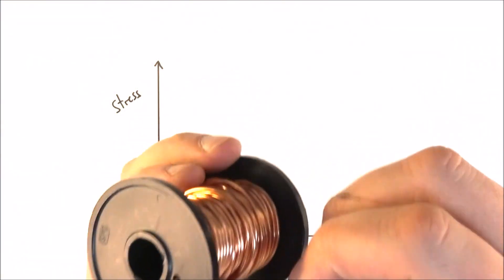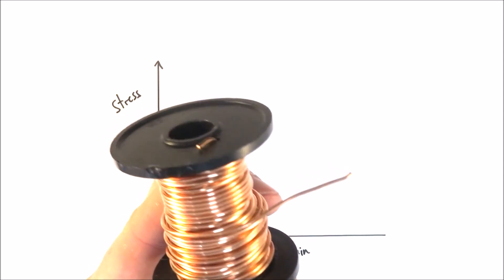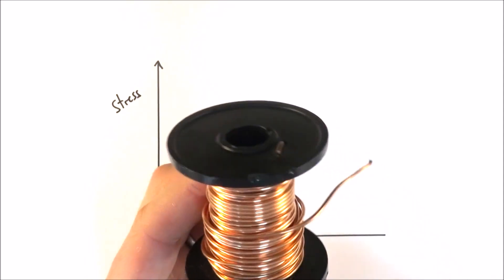So this is a roll of copper, which is a fairly ductile material, and I thought I'd just explore the stress-strain graph for this in a bit more detail.